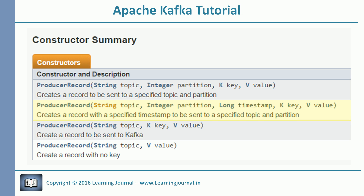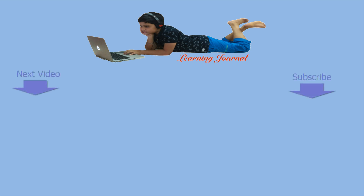Now let's look at the timestamp. Kafka gives a timestamp to every message. If you want to set a message timestamp before you send it to Kafka, you can use this parameter. If you don't set a timestamp, the broker will set it when the message arrives. The former is the time when you are sending the message, and the latter is the time when the broker is receiving it. In the next session we will cover some more details of Kafka producer APIs. Thanks for watching Learning Journal — keep learning and keep growing.